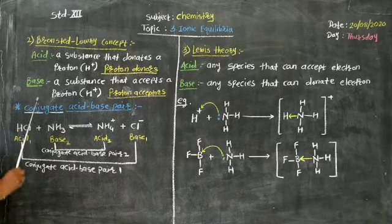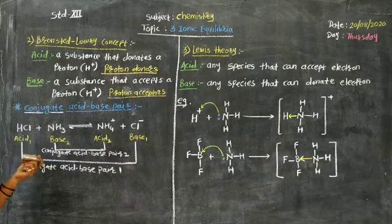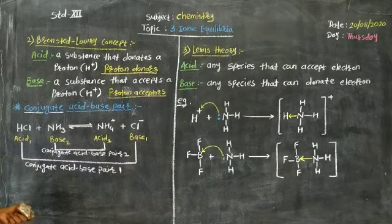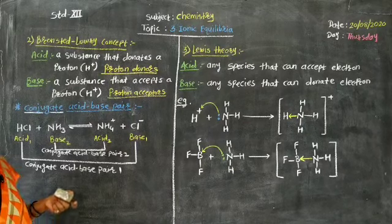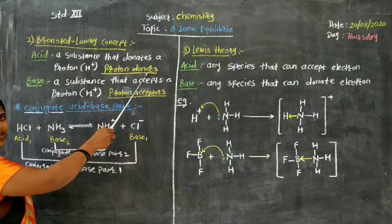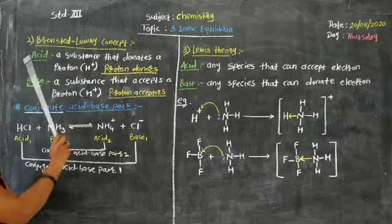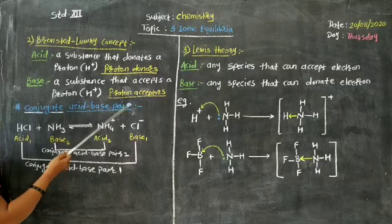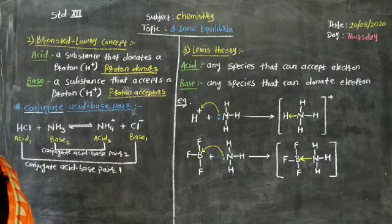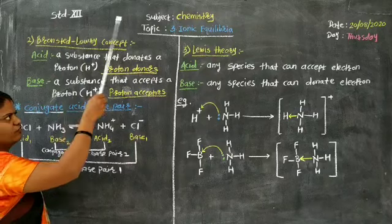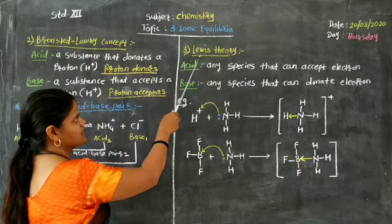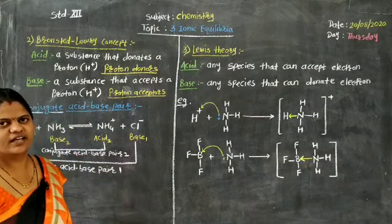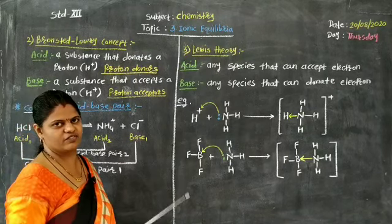Two drawbacks of the Bronsted-Lowry concept: some compounds do not contain a hydrogen atom, so they do not have the tendency to donate a proton, but still they are acidic. The acidic nature of such substances was not explained by Bronsted and Lowry. Therefore, we will study the third concept for acids and bases — given by scientist Lewis — known as the Lewis concept.